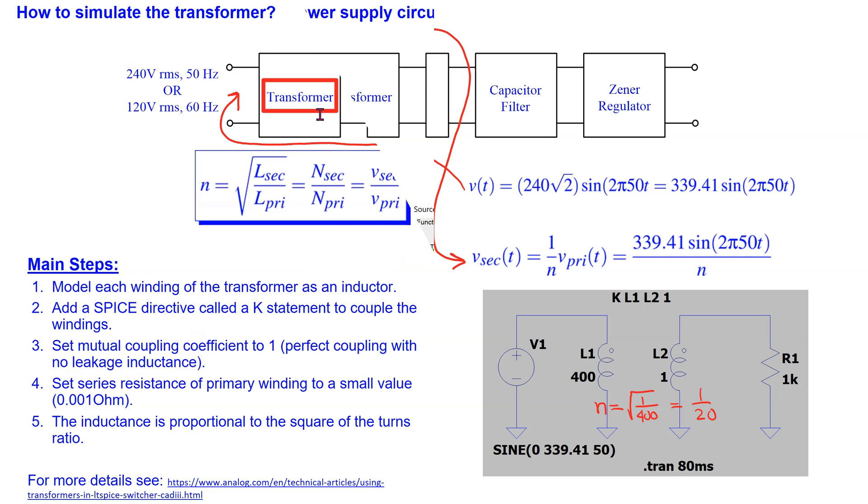The next step is to simulate a transformer. The transformer is not available as a standard component within the LTSpice component library. However, we can easily model the transformer using coupled inductors as shown here. We model each winding of the transformer as an inductor. We add a SPICE directive called the K statement to couple the windings. The syntax is shown here.